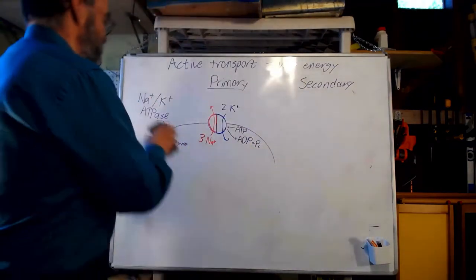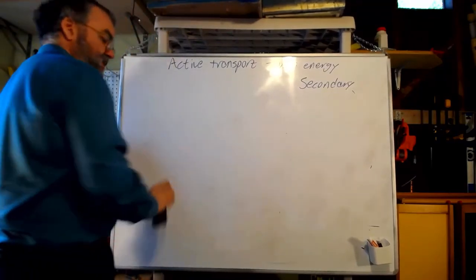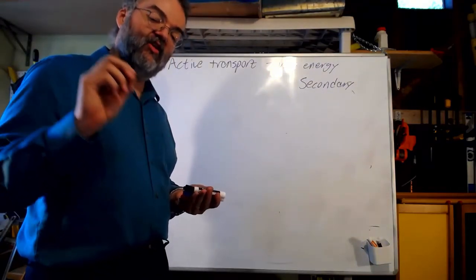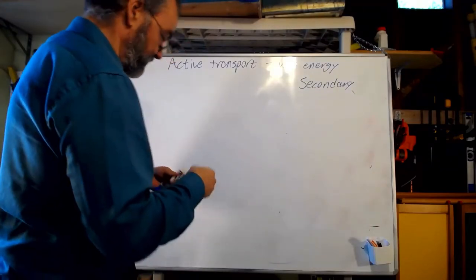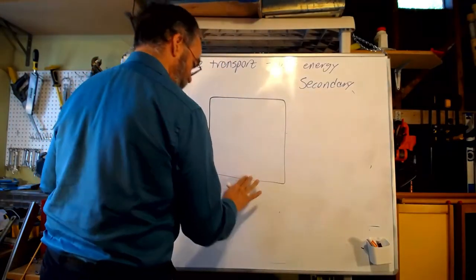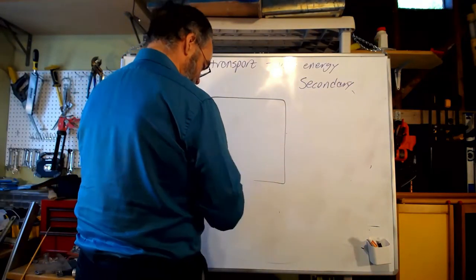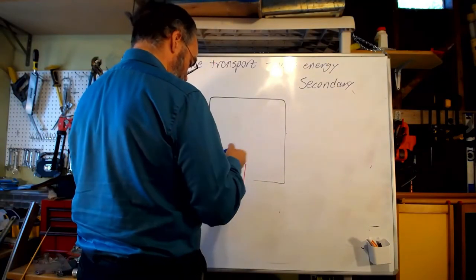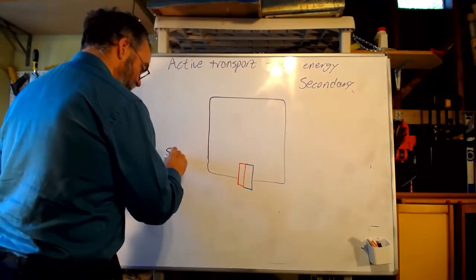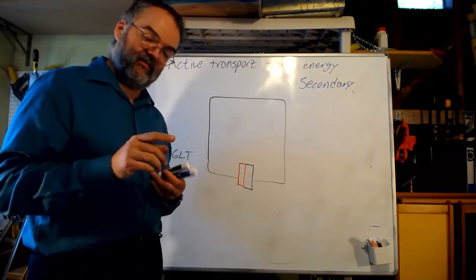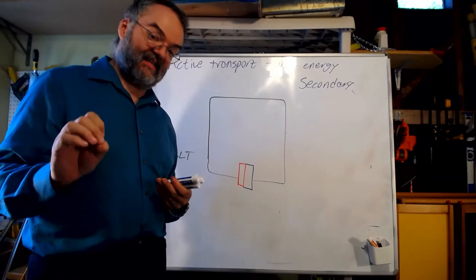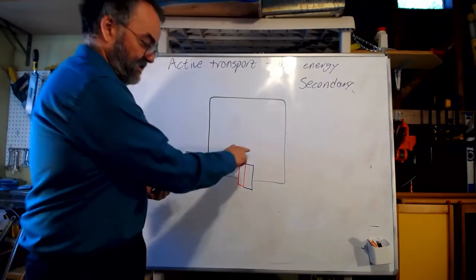But now let's talk about secondary active transport. Secondary active transport is a little more subtle. In secondary active transport, you're going to cause active transport across a membrane without using energy at the place where the transport is occurring. And one common example of this is a protein that you've heard mentioned briefly, which is the SGLT, sodium glucose luminal transport. You may remember that this is a protein which can move sodium and glucose across the membrane, but only if they move in the same direction.